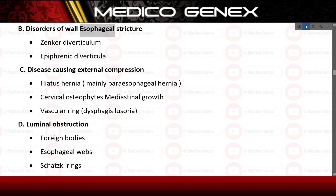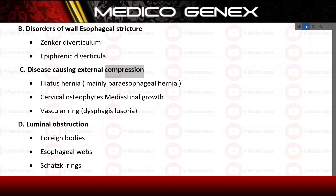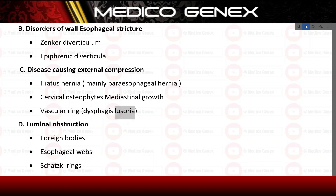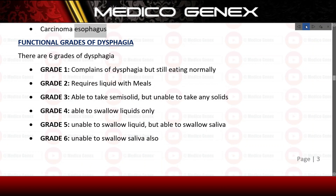B) Disorders of the esophageal wall — esophageal stricture, Zenker's diverticulum, and epiphrenic diverticula. C) Diseases causing external compression — hiatus hernia (mainly paraesophageal hernia), cervical osteophytes, mediastinal growth, vascular ring, and dysphagia lusoria. D) Luminal obstruction — foreign bodies, esophageal webs, Schatzky rings, and carcinoma of the esophagus.